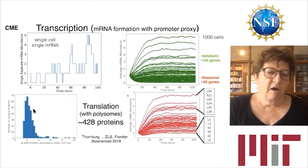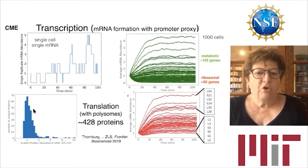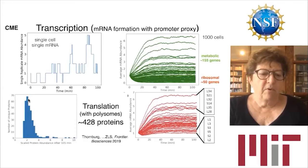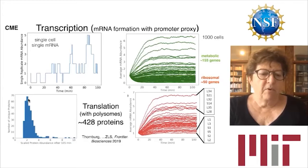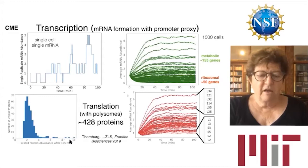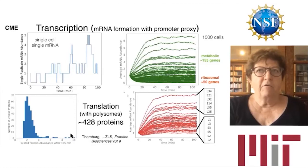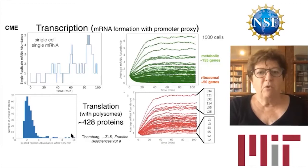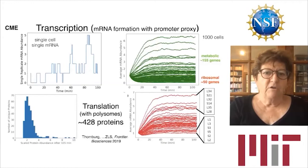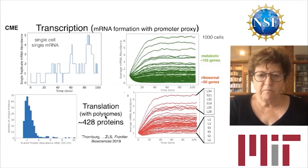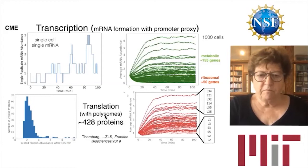We also looked at ribosomal proteins, with similar mRNA abundance numbers. At the end of 105 minutes, we should have double the number of proteins from proteomics numbers. Our simulations show we tend to overproduce some proteins, which are anomalies I'll skip for time. In our polymerization models, each process is modified slightly by a factor for promoter strength. In translation, particularly long transcripts also allow for polysomes.